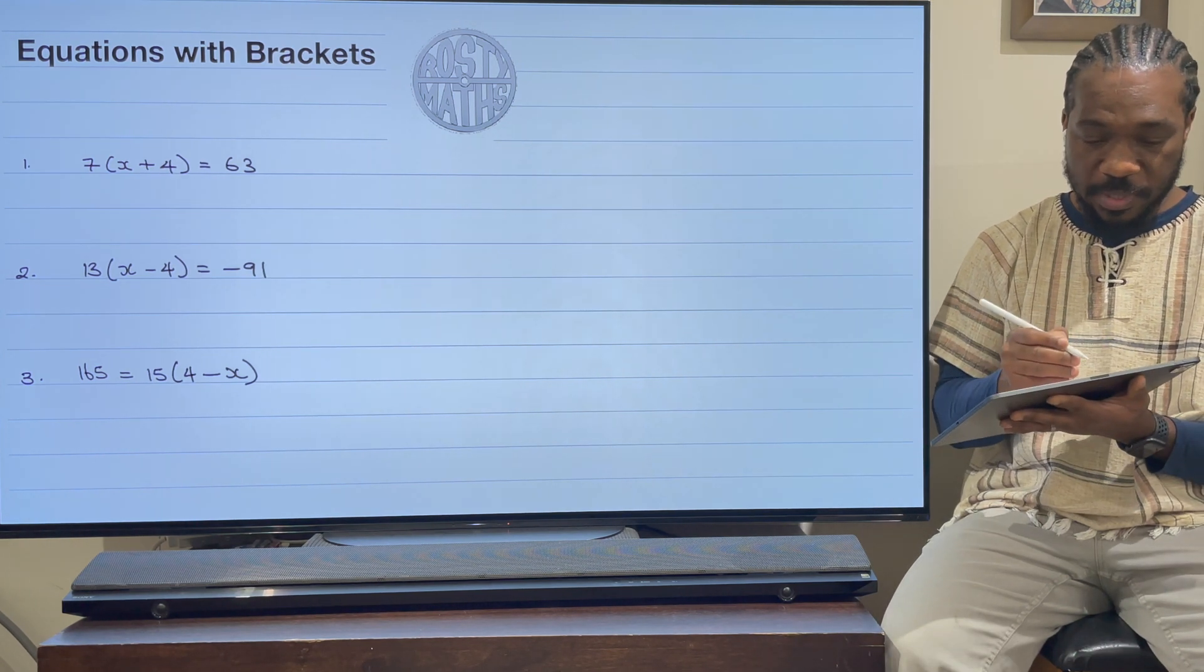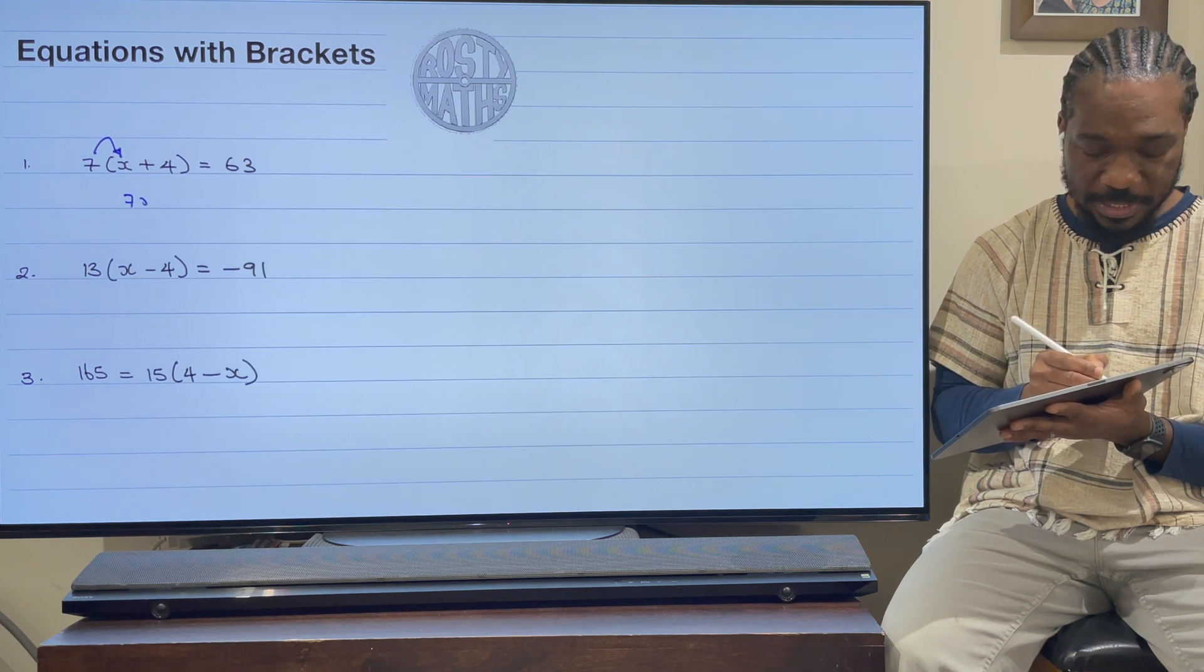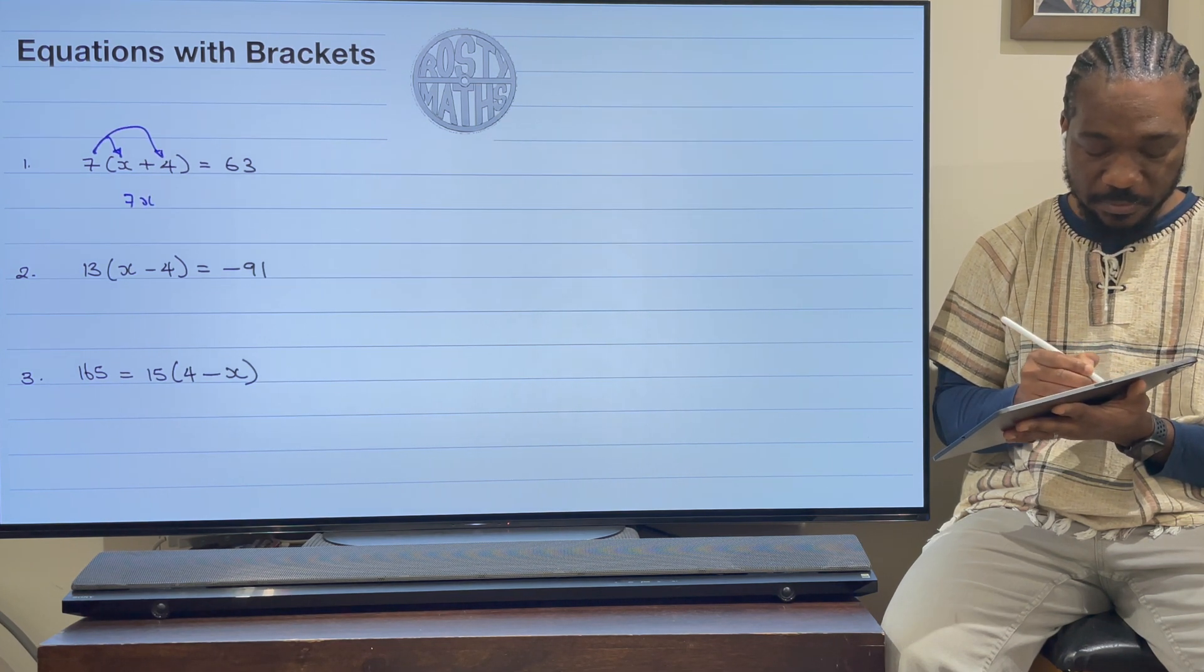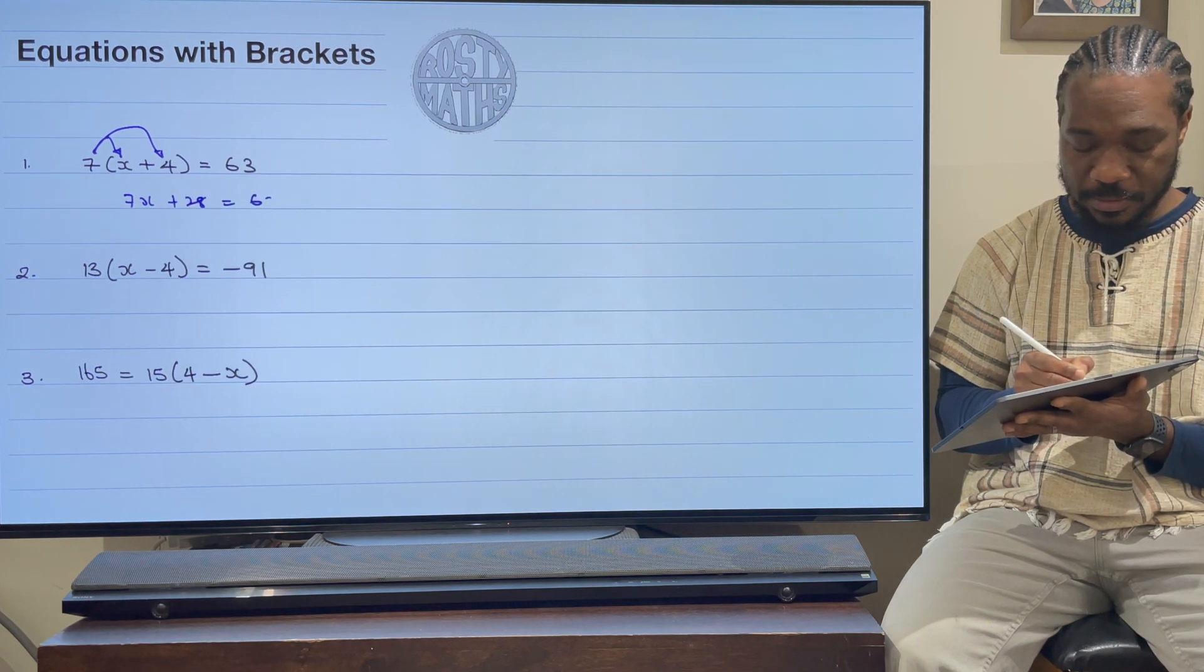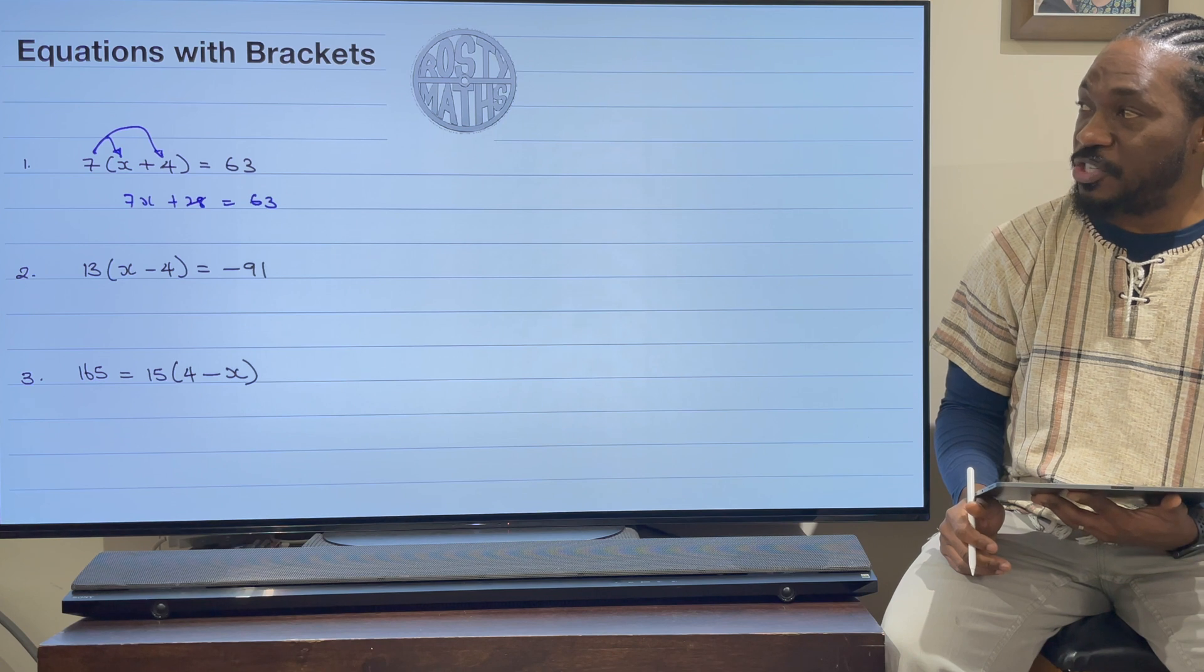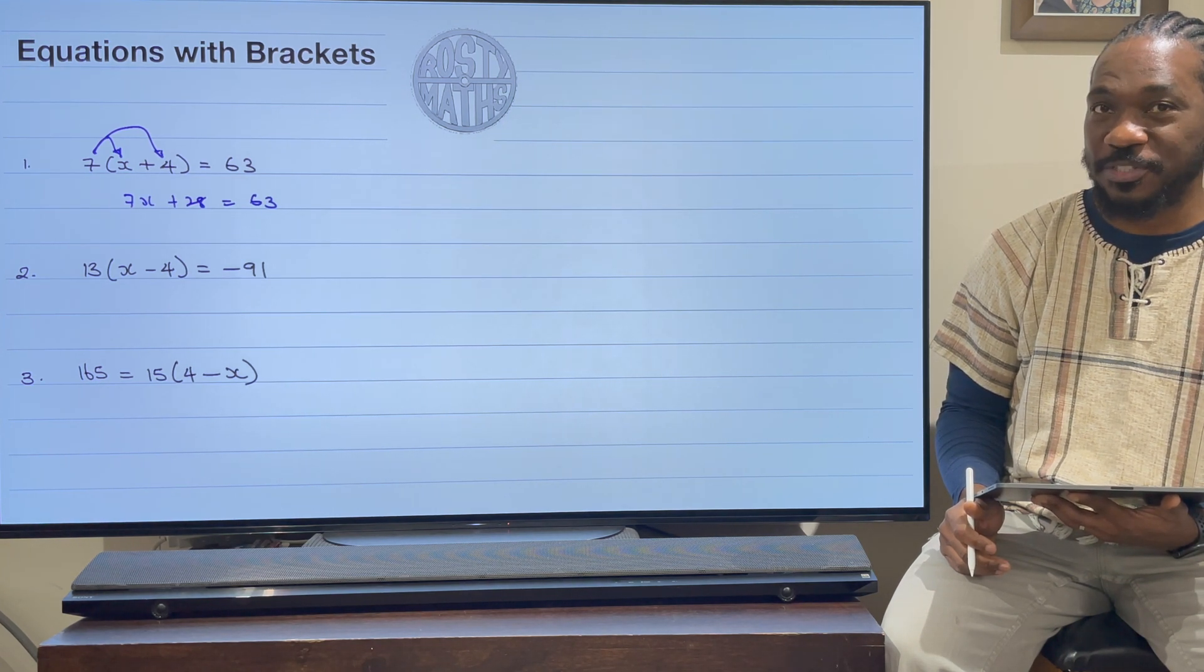So the first way I'm going to go is I'm going to expand the bracket first. So I'm going to expand my bracket: 7 times x, that's going to be 7x, and then 7 times 4, that's going to be 28, and that equals to 63.